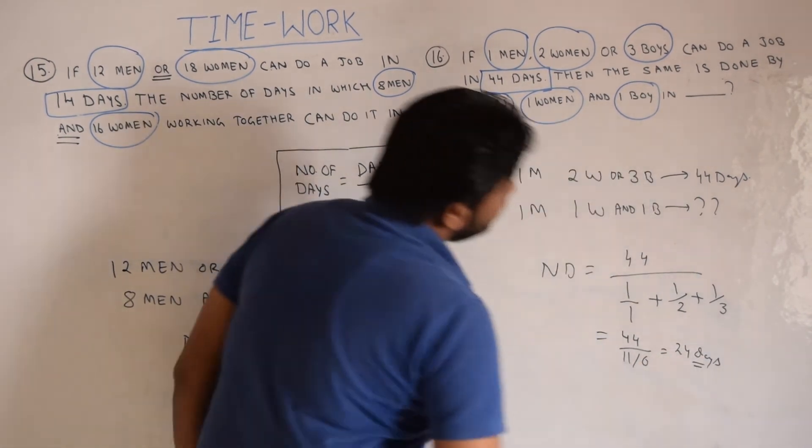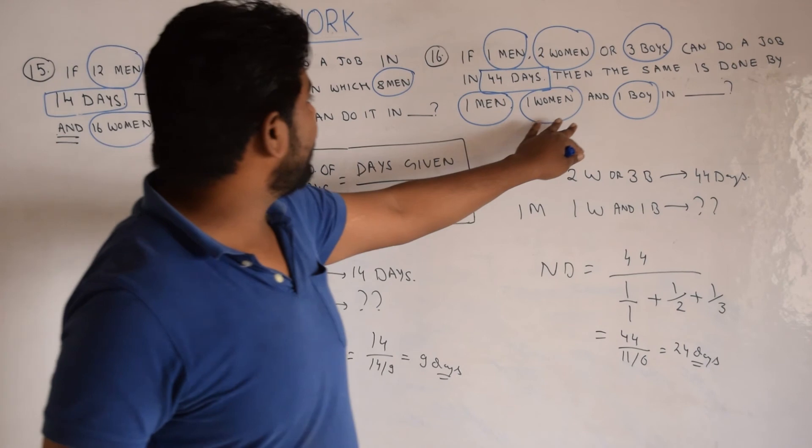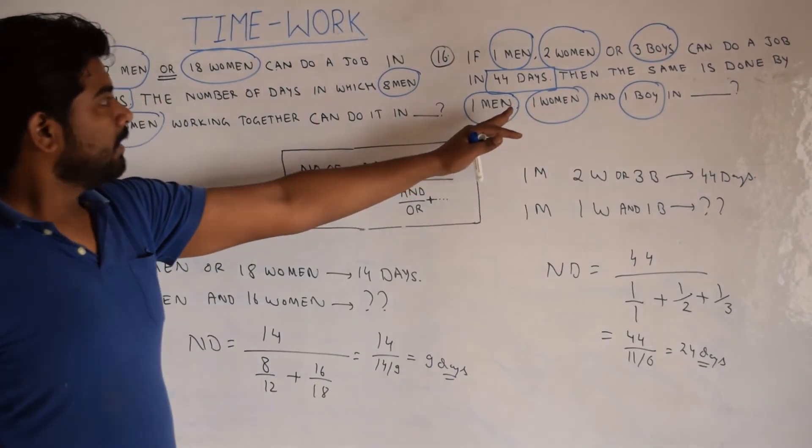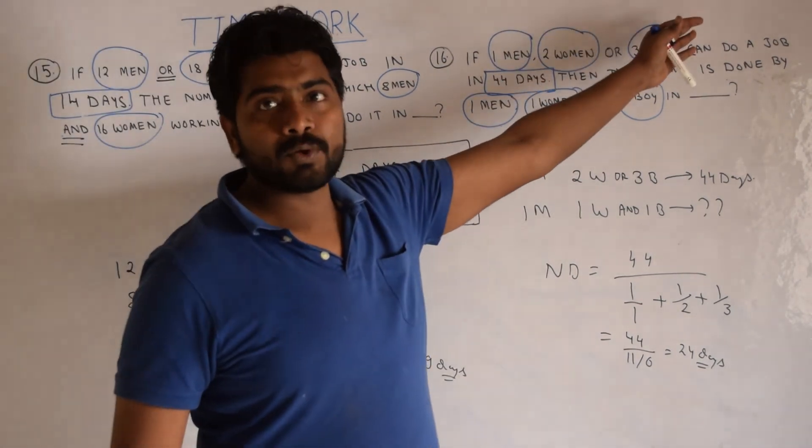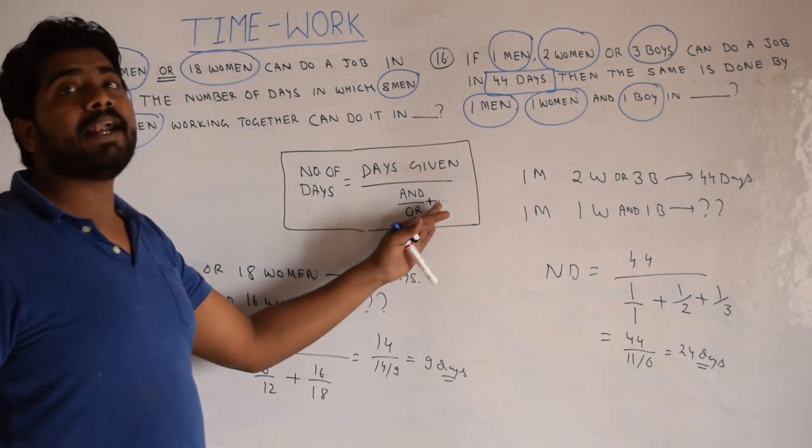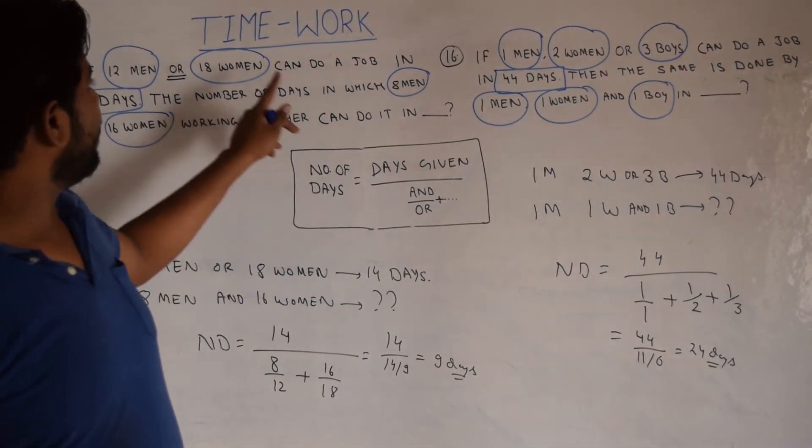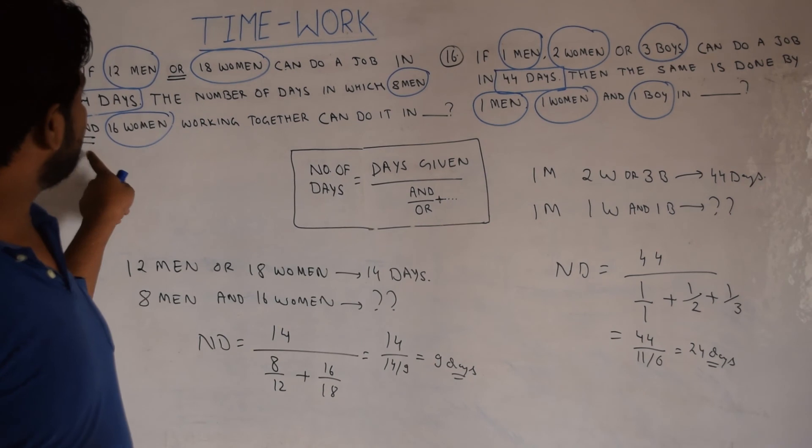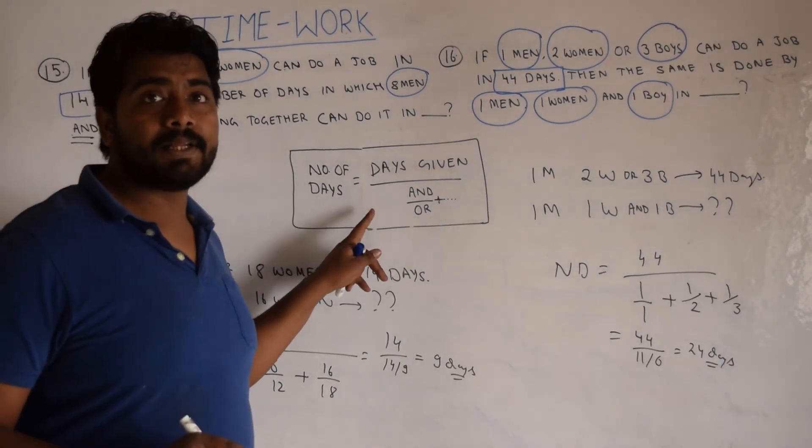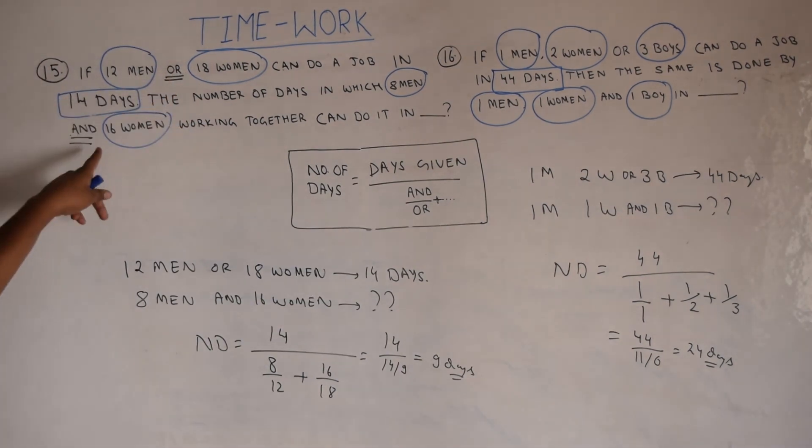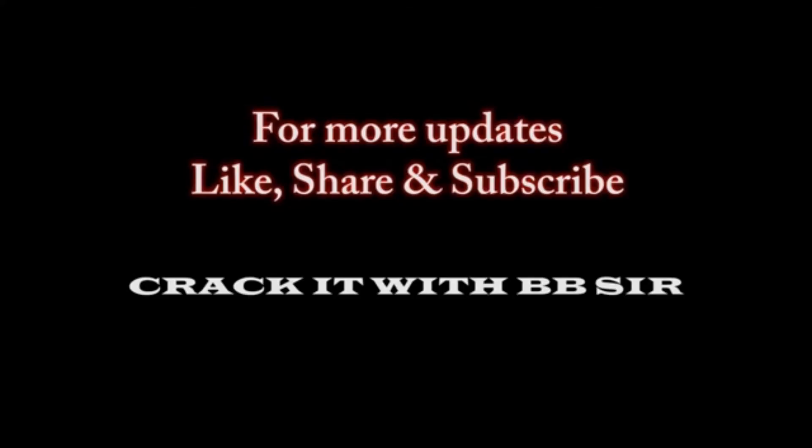In 24 days, these one man, one woman and one boy is going to complete the work. So if more entities are added, we will be simply adding this here in the denominator. Clear? You have to note that this formula is applicable only if there is a combination of AND and OR. Clear?